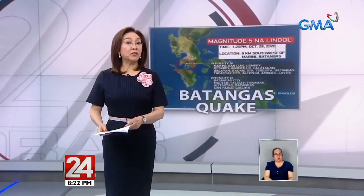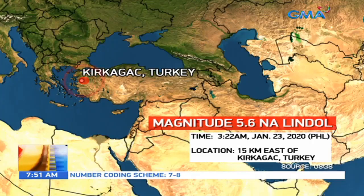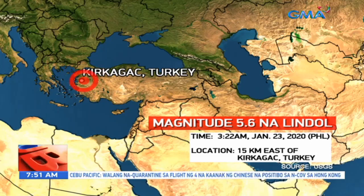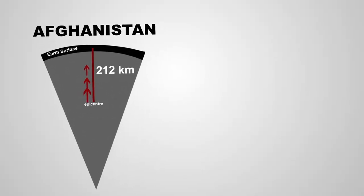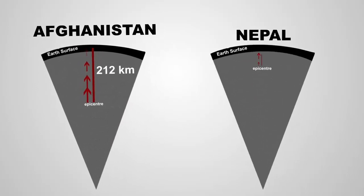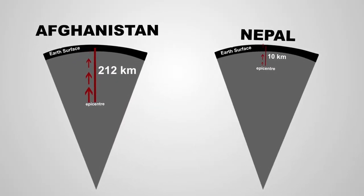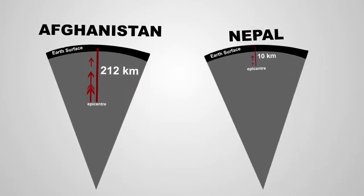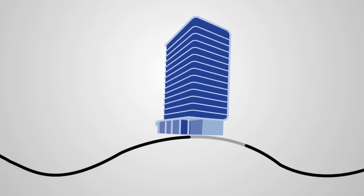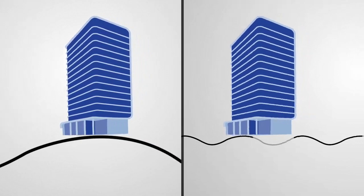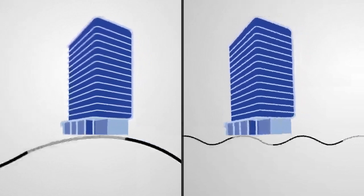The subduction of a plate can cause earthquakes at varying depths. Most of the world experiences occasional shallow earthquakes, where the focus is within 60 kilometers of the Earth's surface, accounting for 85% of the total energy released by earthquakes. About 12% of energy originates from intermediate earthquakes with a focal depth range of 60 to 300 kilometers. Lastly, deep earthquakes originate from more than 300 kilometers to 700 kilometers below the Earth's surface.